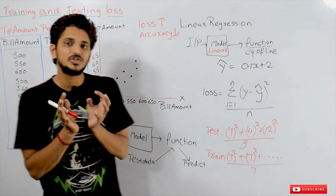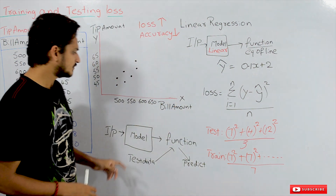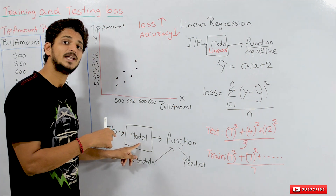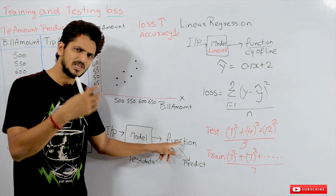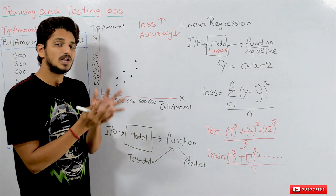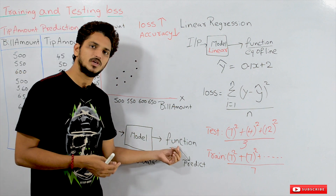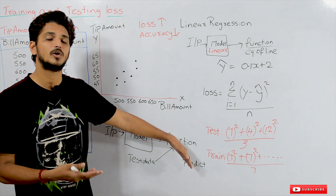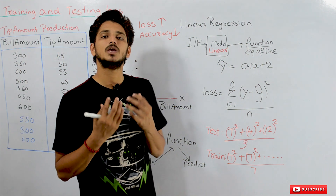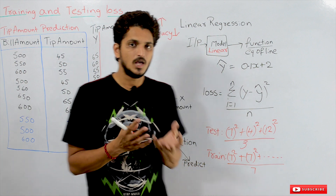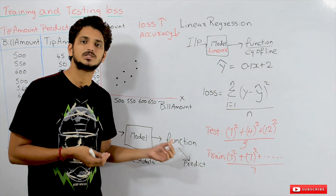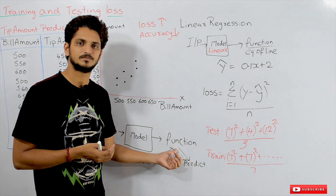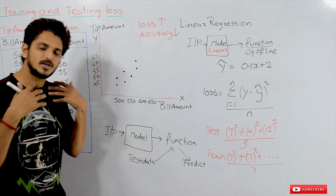What do our machine learning models do? Our machine learning models take training data as input, and the model will identify a function — some mathematical function. This function helps in predicting future data points, meaning testing points. For example, suppose a new customer came into our restaurant and made a bill amount of 500. If you substitute that 500 value into this function, the function will give you a prediction about how much tip amount he will give. That is what this function will do — that's what machine learning algorithms do.